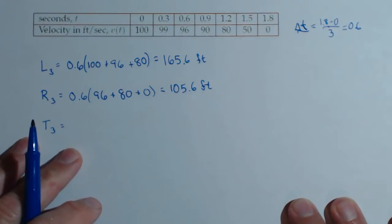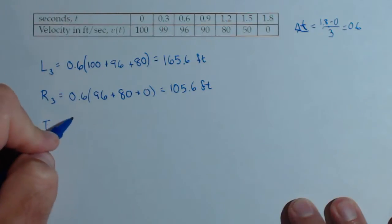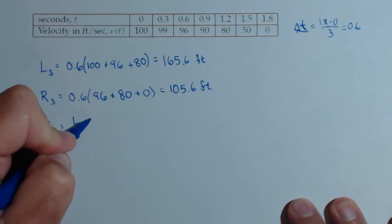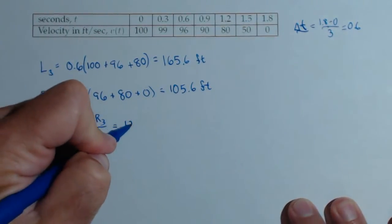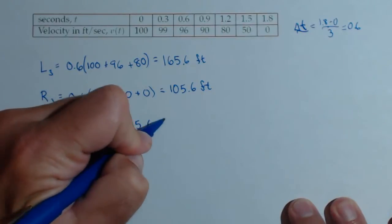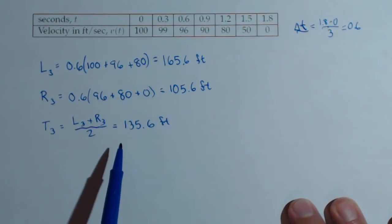Now that we've already got the left-hand and right-hand rule calculated, the trapezoid rule will be very quick, because we'll just average the two, left-hand rule plus the right-hand rule over two, which comes out to be 135.6 feet.